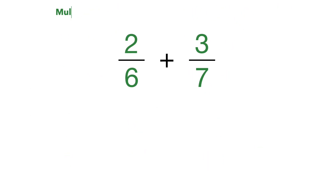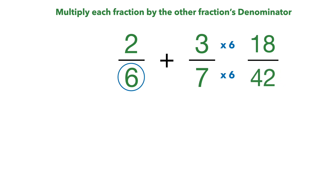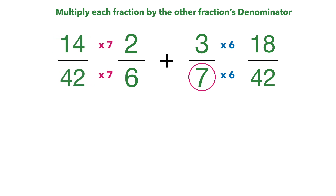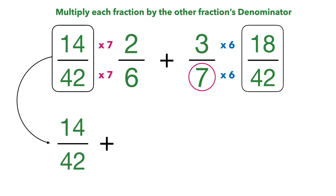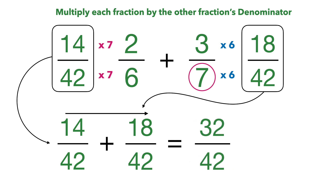Let's move on to our last example: 2 sixths plus 3 sevenths. We're going to do the exact same process — multiply each fraction by the other fraction's denominator. So we multiply 3 sevenths — both 3 and 7 — by 6: 3 times 6 is 18 and 7 times 6 is 42. Then for 2 sixths, we multiply by 7: 2 times 7 is 14, 6 times 7 is 42. Now we can start adding: 14/42 plus 18/42. Start with the numerators: 14 plus 18 gives us 32, and our denominator stays the same at 42.